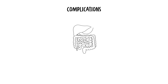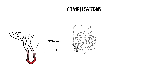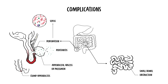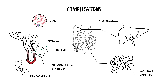Complications of appendicitis include perforation, which can lead to peritonitis — inflammation of the peritoneum lining the abdominal cavity. An appendiceal abscess or phlegmon can occur from bacterial microperforation, and complete perforation can lead to sepsis. Small bowel obstruction can occur. Stump appendicitis is a rare recurrence of inflammation at the remnant appendix. In rare cases of sepsis, bacteria entering the bloodstream can travel to the liver, resulting in a hepatic abscess or portal pyemia.